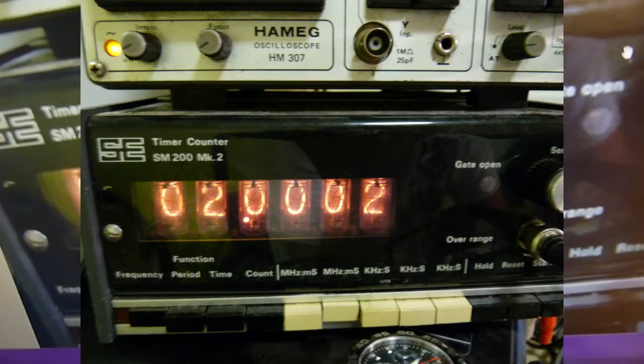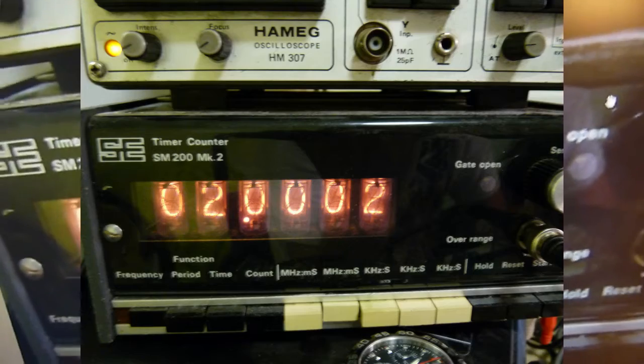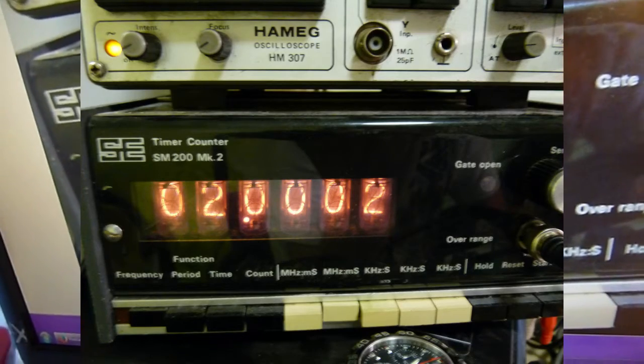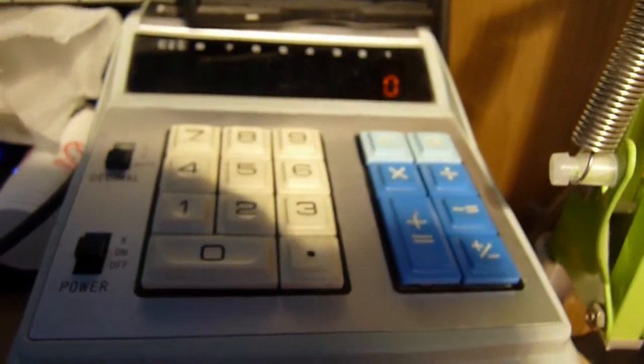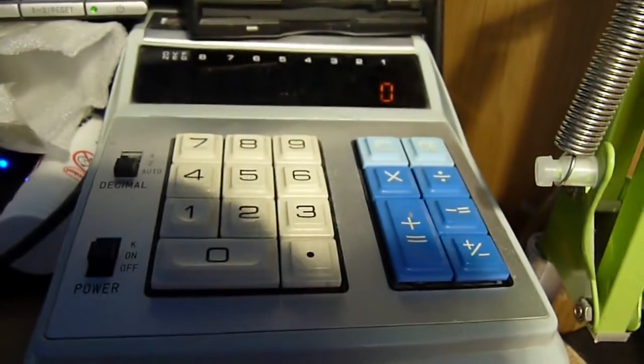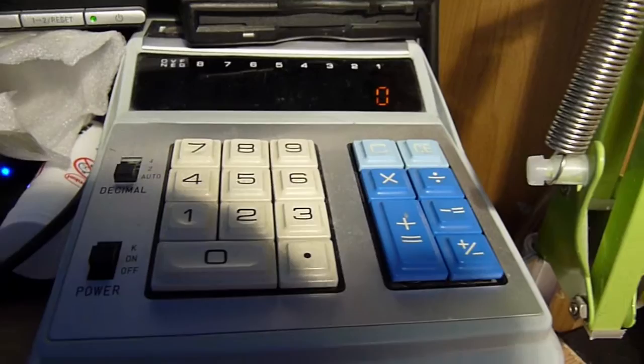The places I personally have Nixie tube devices that are active is in my frequency counter, my Nixie clock, my Kovac K80 calculator which uses a rare 7-segment kind, also known as PAN.